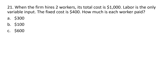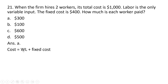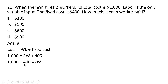Question 21 is somewhat challenging. When the firm hires two workers, its total cost is $1,000. Labor is the only variable input and fixed cost is $400. How much is each worker paid? Answer choice A is correct. Total cost equals variable cost plus fixed cost, where variable cost is the wage times the number of workers. We know total cost is $1,000, L equals 2, and fixed cost is $400. Solving: $1,000 equals 2W plus $400, so 2W equals $600, and each worker is paid $300. Answer choice A.